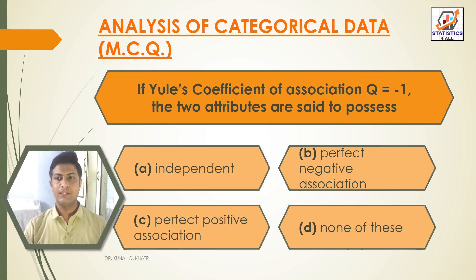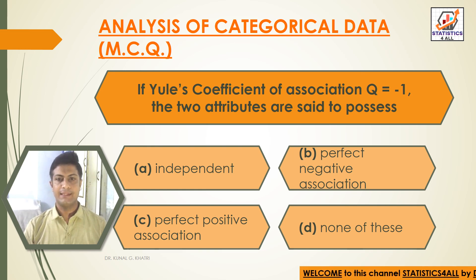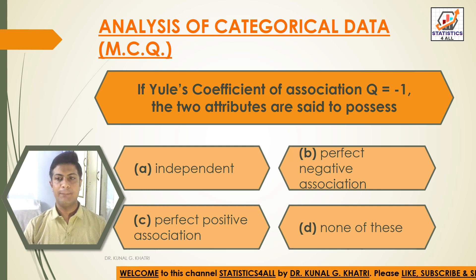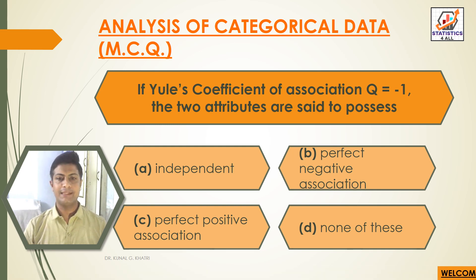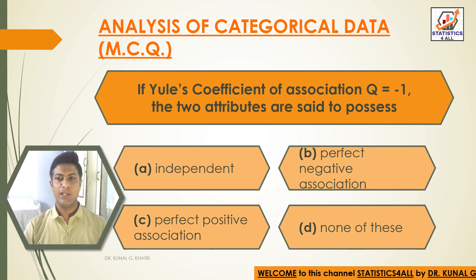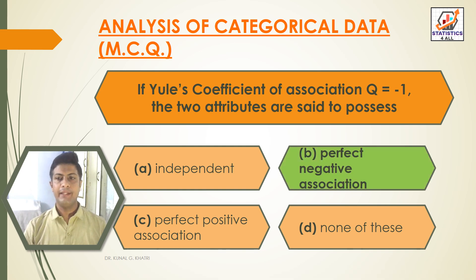Next question: if Yule's coefficient of association Q is equal to −1, the two attributes are said to possess — option A: independent, option B: perfect negative association, option C: perfect positive association, option D: none of these. The answer is option B — perfect negative association. If Q equals −1, the two attributes possess perfect negative association.